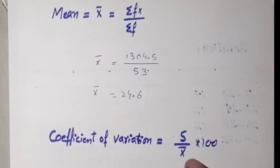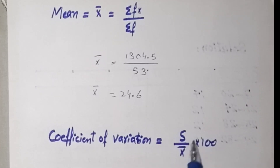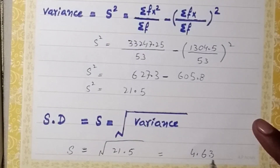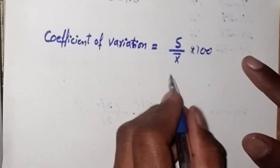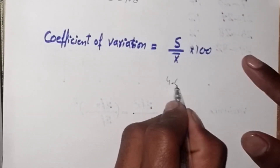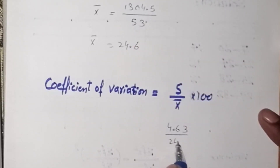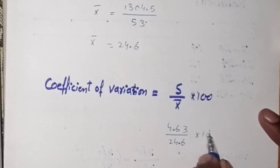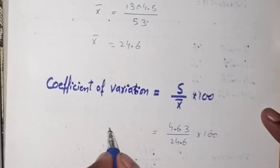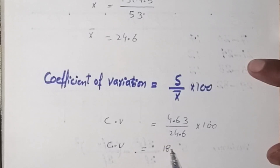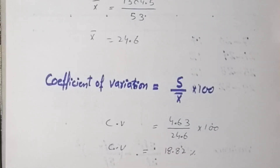Lastly, we calculate the coefficient of variation for this grouped data. The formula is: standard deviation divided by mean, multiplied by 100. The standard deviation is 4.63 and the mean is 24.6, so 4.63 divided by 24.6, multiplied by 100, gives a coefficient of variation of 18.82 percent.